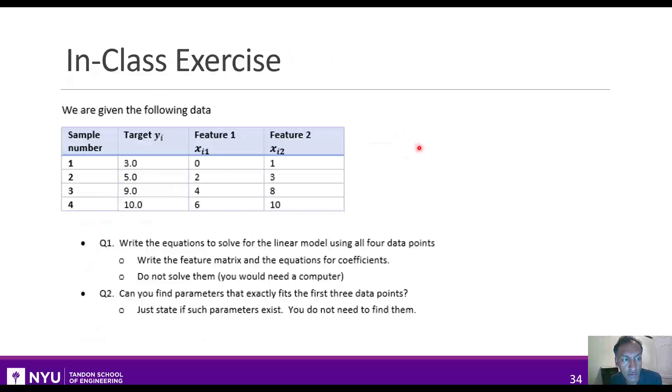Now, before you go on any further, you can try the in-class exercise. This is just another super simple example where you calculate the parameters for a very simple dataset with 4 samples and 2 features.